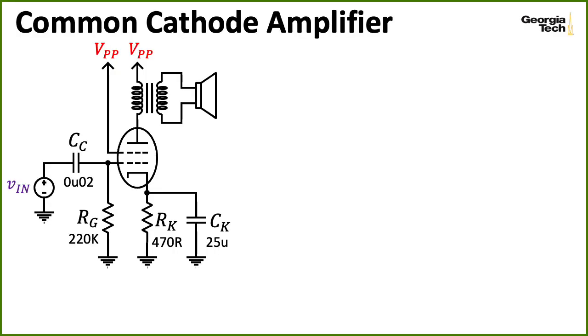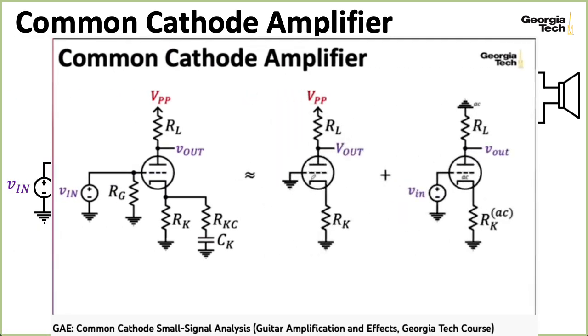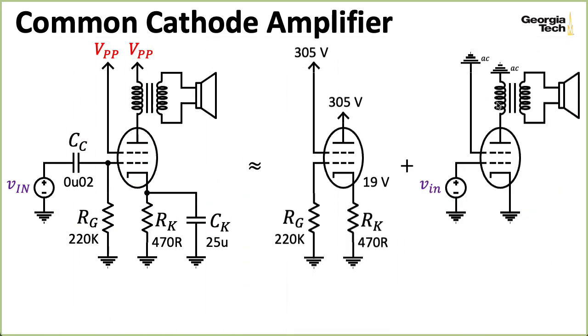Decomposing this common cathode amplifier into its DC bias and small signal circuits, we see something that's a little bit different compared to the kinds of common cathode preamplifier stages we looked at that were intended to achieve voltage gain. Namely,